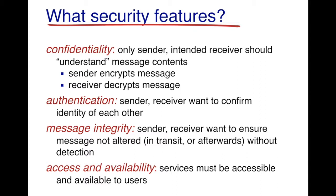The second feature Alice and Bob would want is authentication. Both the sender and the receiver want to confirm each other's identity. In face-to-face communication this is straightforward, but in the online world it is not possible to visually verify that messages are arriving from the intended person. So authentication is a key feature that both Alice and Bob would want.